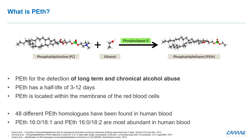Phosphatidylethanol, short PEth, can be used for the detection of chronic alcohol abuse, as it stays up to 28 days within the bloodstream after consumption. The half-life time of PEth is 3 to 12 days, and it is located within the membrane of the red blood cells.